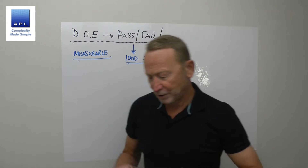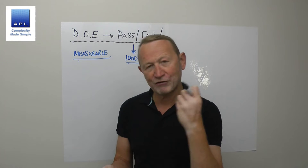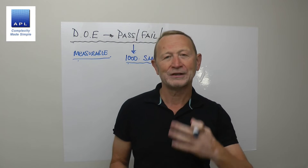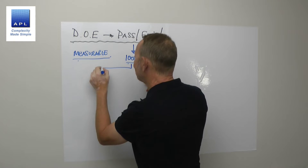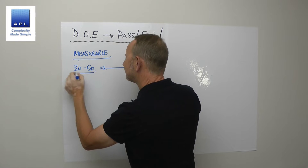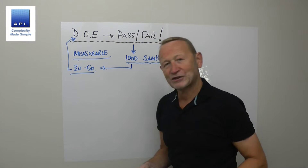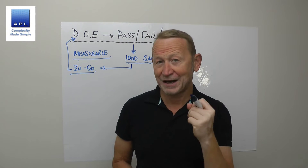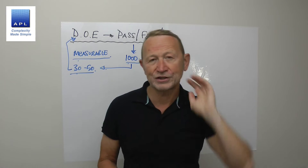So if what you have isn't pass-fail — it's measurable — for example, if you're weighing the weight in a food pack: 250 grams, 251 grams, et cetera, that's measurable. If it's measurable data, the same sample size is 30 to 50. And that's normally what we want available in a DOE — normally 30 to 50.